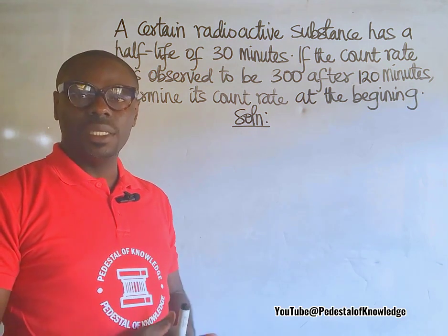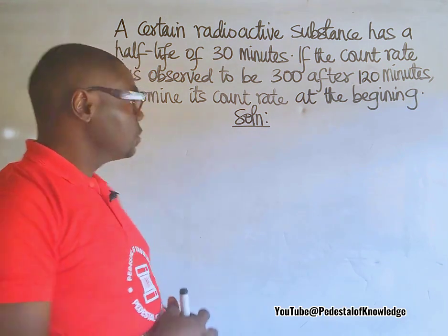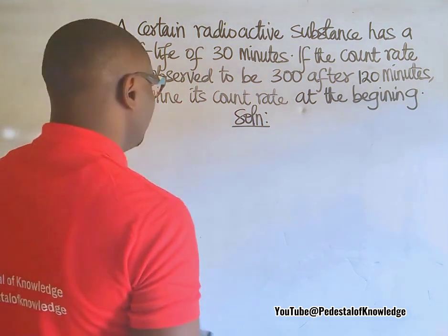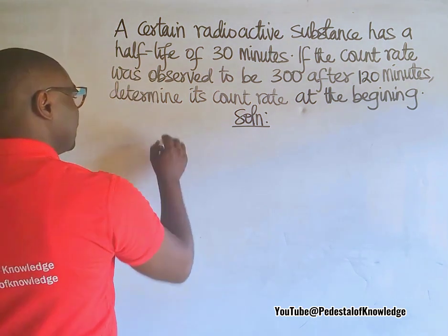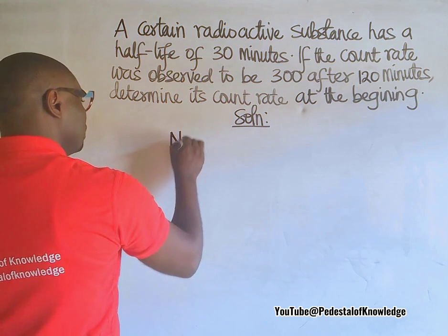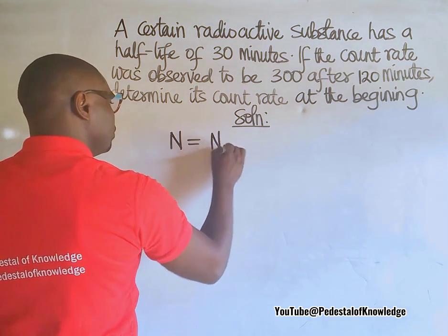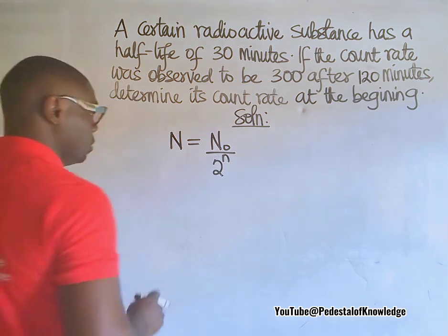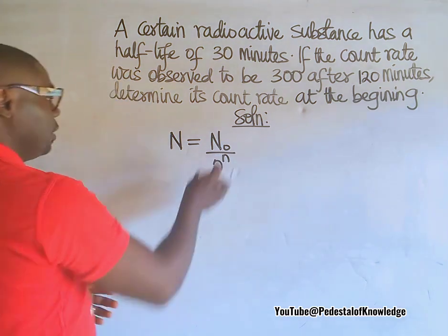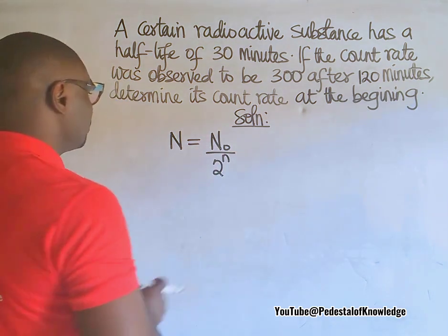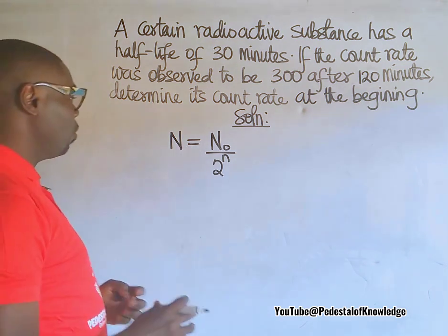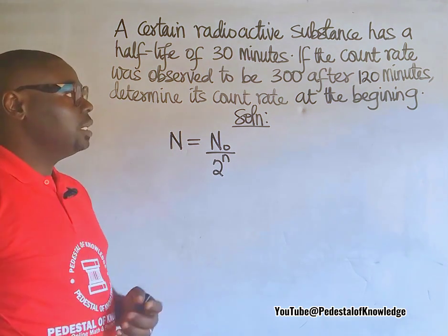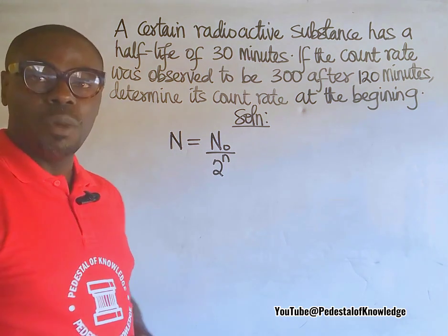That means find the count rate at the 0 minute. We are going to engage the formula which says that N is equal to N₀ divided by 2 raised to power n, where N₀ is the original number of atoms, N is the number of atoms remaining after some time, and the small letter n is the number of half-lives.